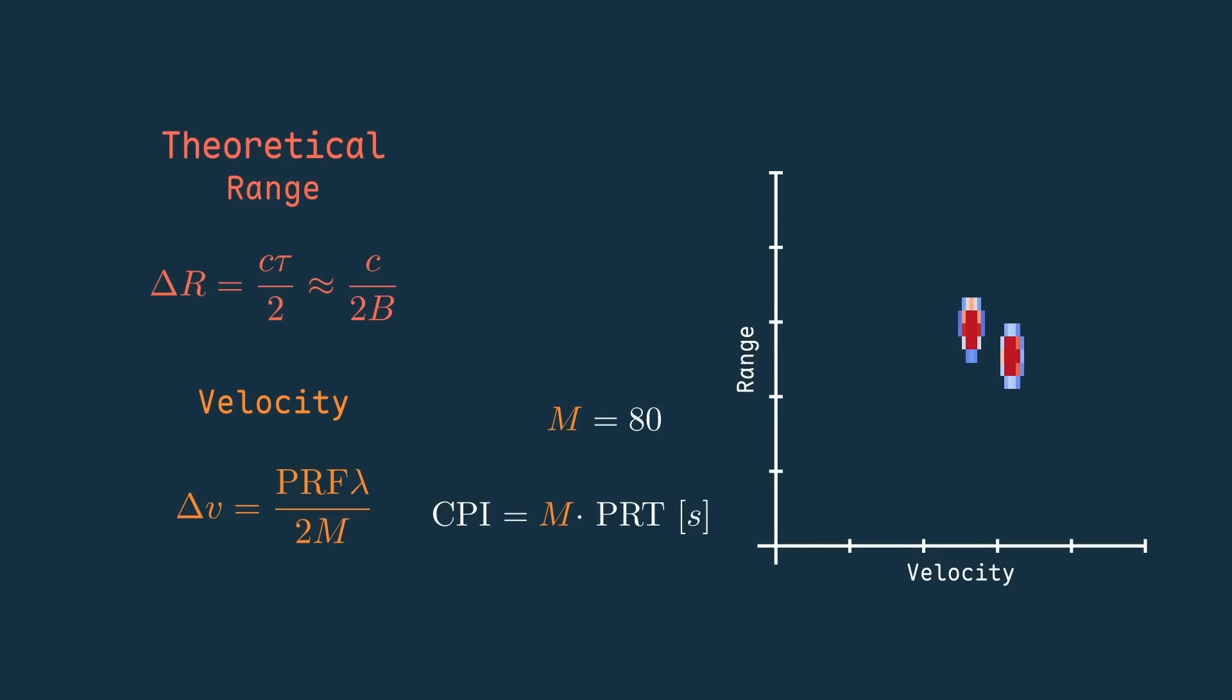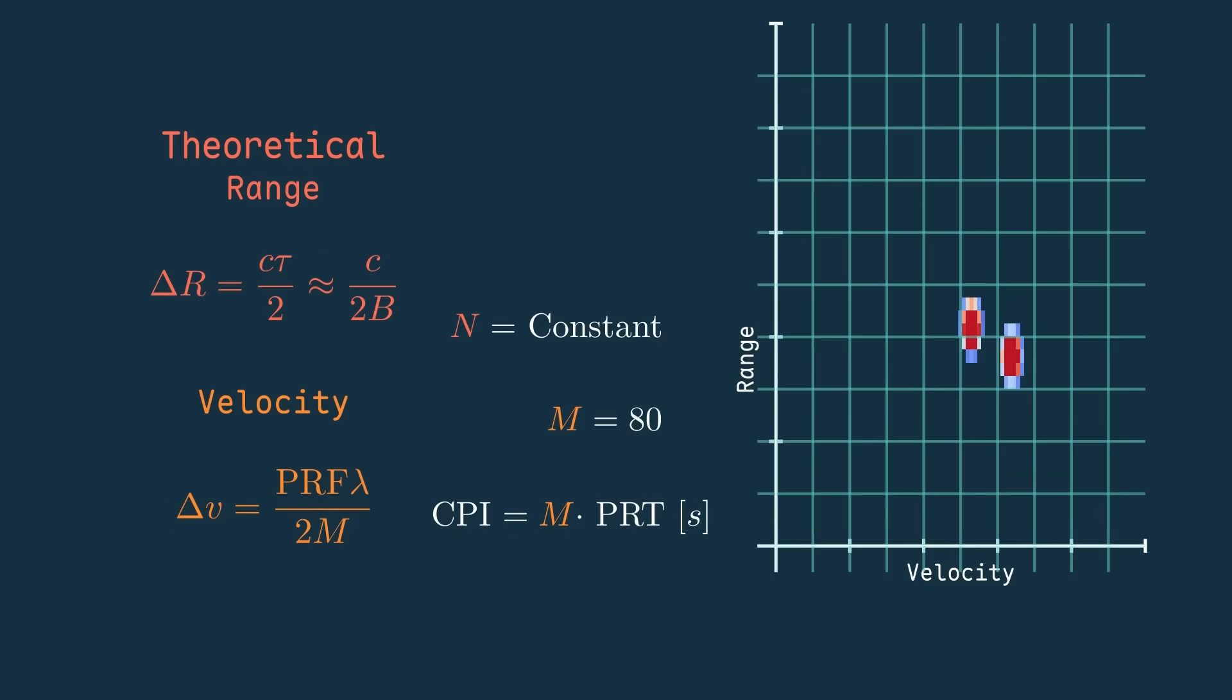In this case, since we're increasing the time that we're taking measurements, we're also increasing the maximum unambiguous range. This would be fine if we scaled the number of samples with that increase in range, but if we don't due to signal processing constraints or some other limitation, that same number of samples is stretched across a longer range, making each of the cells larger.